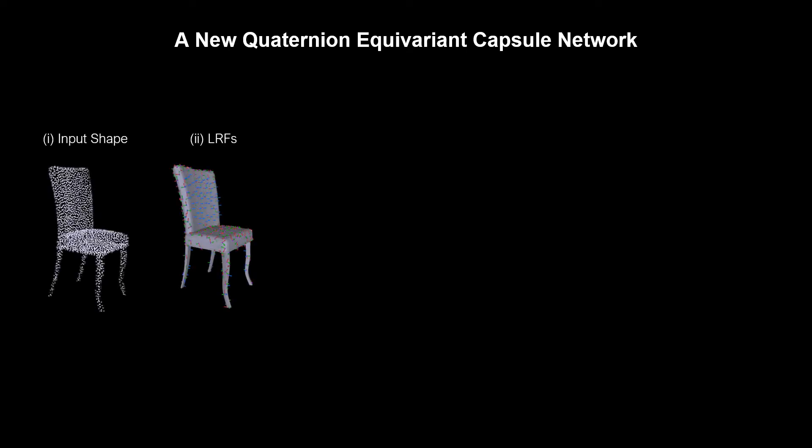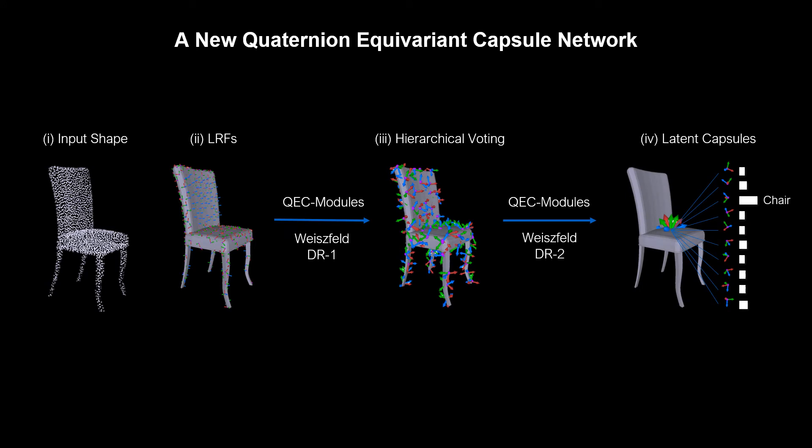Our core contribution is a new equivariant layer that receives as input a set of local reference frames represented as quaternions. It deduces an equivariant latent space by robustly combining those frames into group-valued capsules through voting. We prove the equivariance of this voting to a general case of the Weisfeld algorithm and aptly call the resulting operation Weisfeld dynamic routing. Our structured latent space is composed of a set of frames related to the object pose as well as corresponding activations that remain unchanged under the action of rotations. We use the latter in classification.